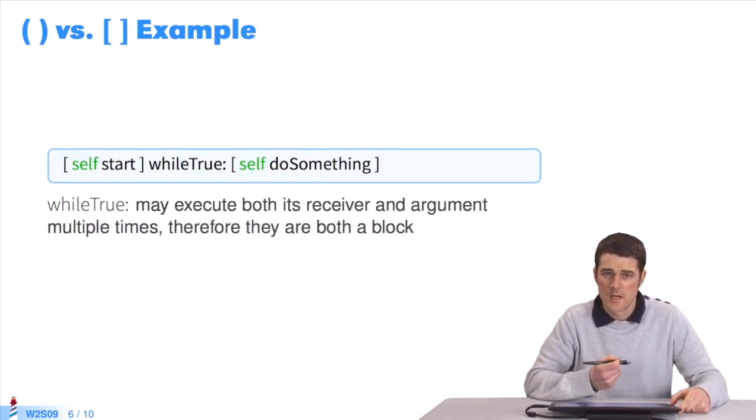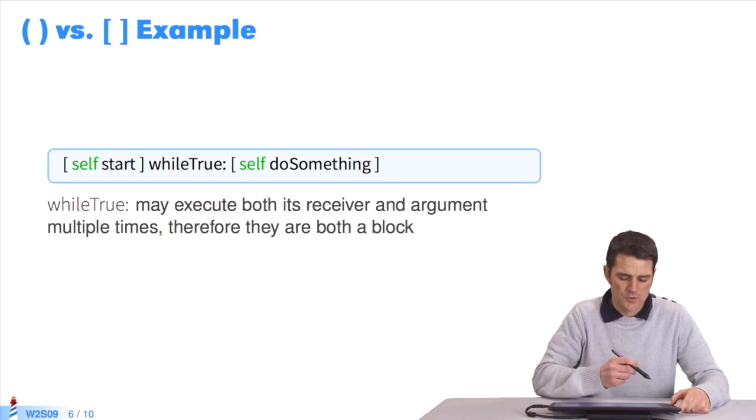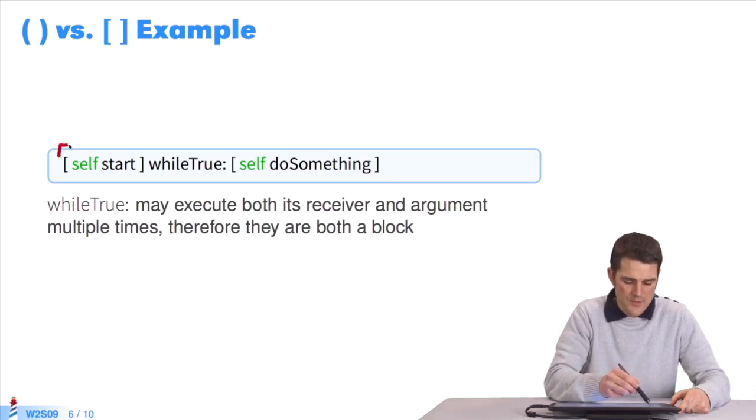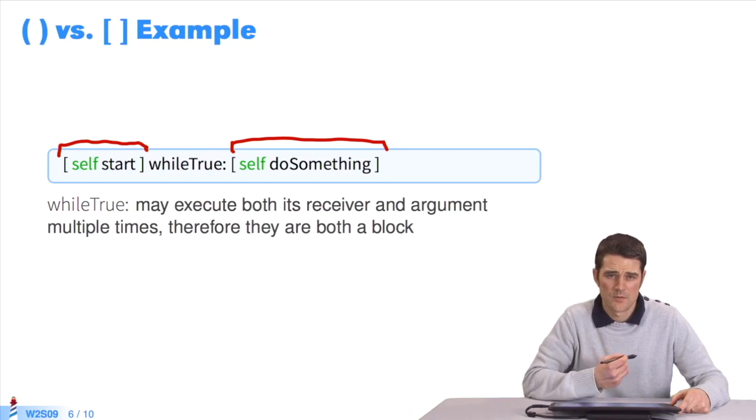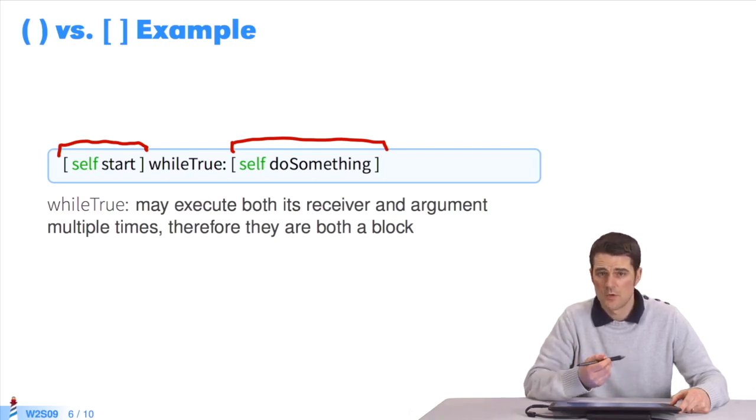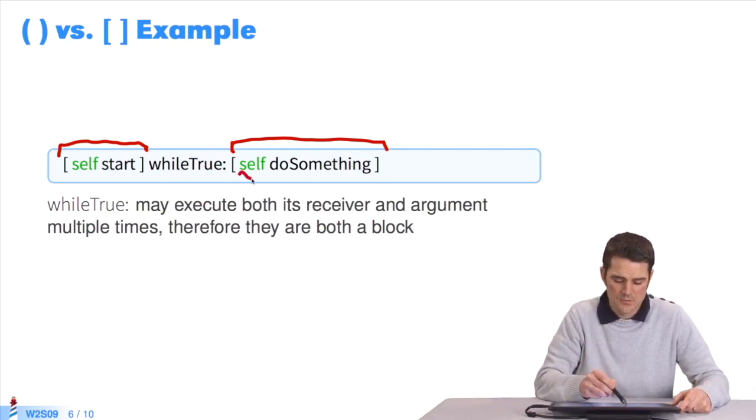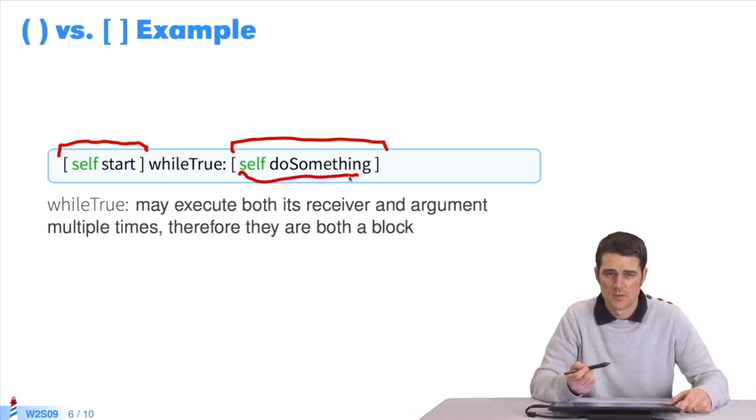This is the same thing, but with while true. It's the same with the receiver block and the block passed as a parameter. Depending on whether the evaluation returns the Boolean true or false, you must execute once, several times, or even not at all. The expression self do something must be put in a block.